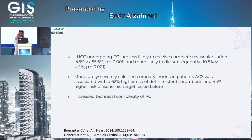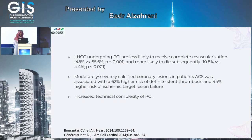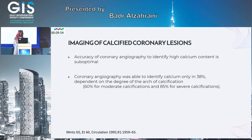Patients with heavily calcified vessels usually don't receive complete revascularization, which affects outcomes. They have a higher rate of stent thrombosis and ischemic target lesion failure. It also increases the technical complexity of PCI — there is difficulty in wiring lesions, advancing equipment, pre-dilatation, lesion preparation, stent deliverability, and it can cause stent fracture.